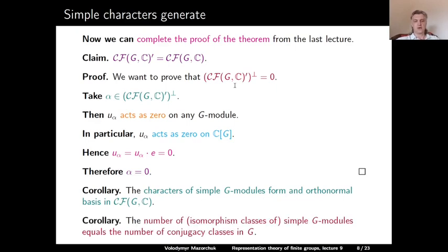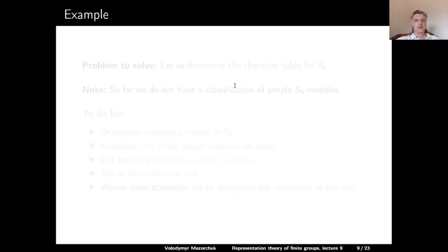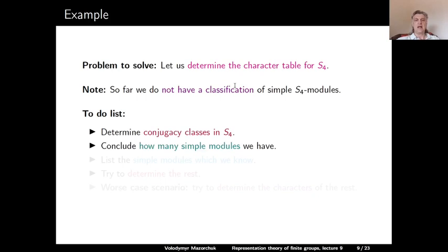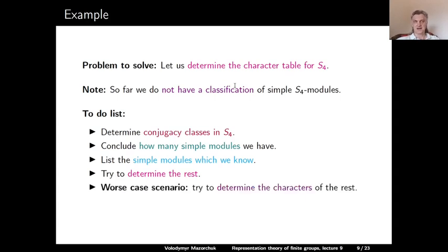In particular, the number of isomorphism classes of simple G-modules equals the number of conjugacy classes in G. Let us now use this big theorem to compute an example: we determine the character table for the symmetric group S4. Note that so far we do not have a classification of simple S4-modules. What we will do is first determine all conjugacy classes in this group, then conclude how many simple modules we should have, list the simple modules we know, try to determine the remaining ones, and if necessary determine the characters of the unknown simple modules.